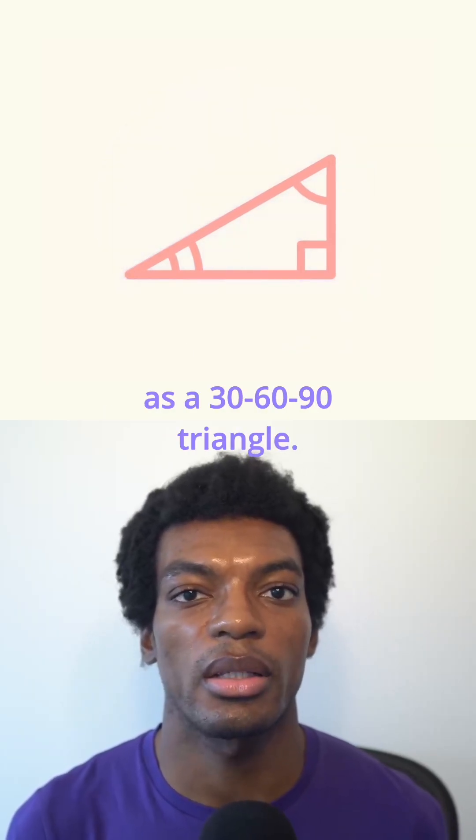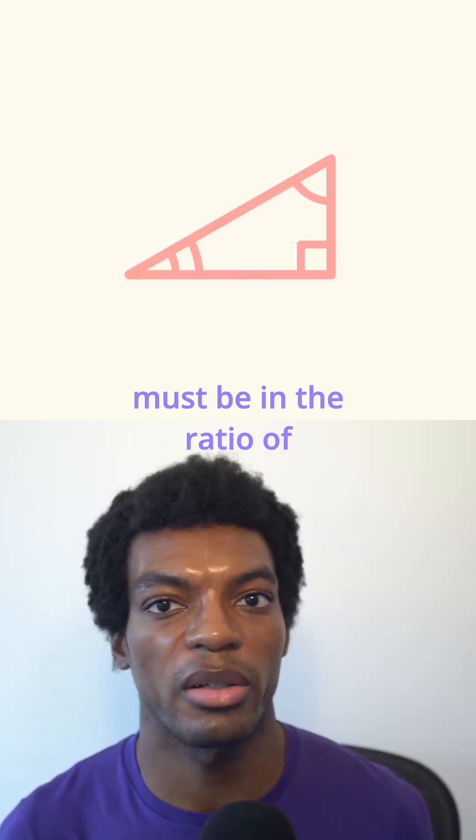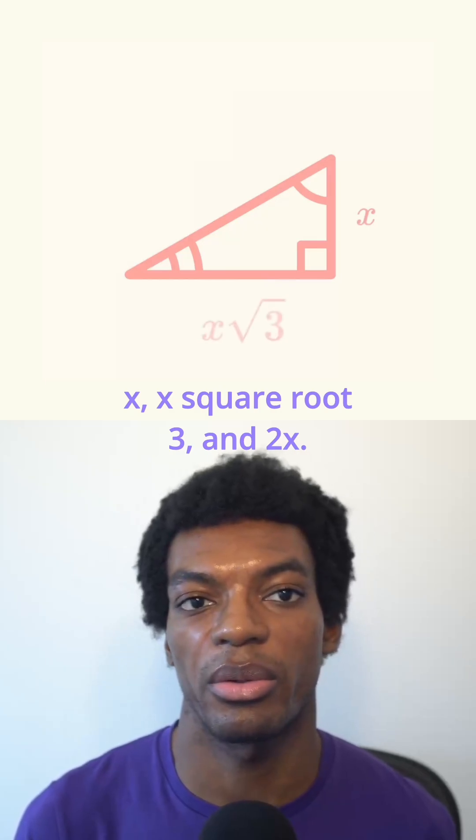You'll recognize this as a 30-60-90 triangle. And since it is, we know its side lengths must be in the ratio of x, x square root 3, and 2x.